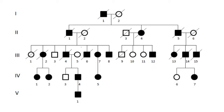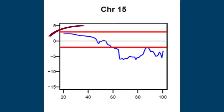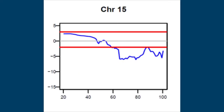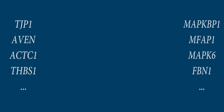We then performed linkage analysis on 11 members of the family. A large linked region was found on chromosome 15. This region included 80 genes with more than 15 candidate genes.